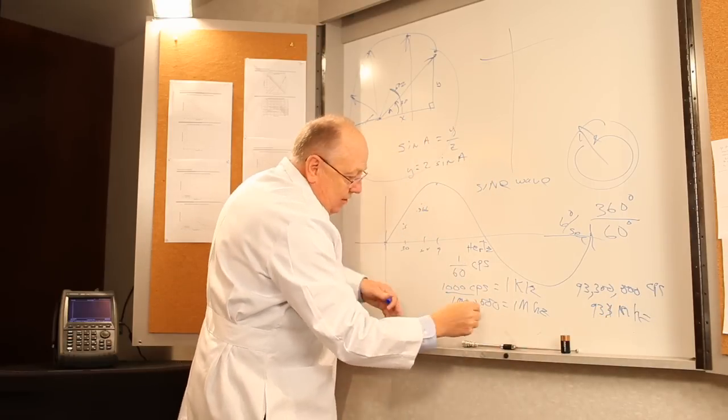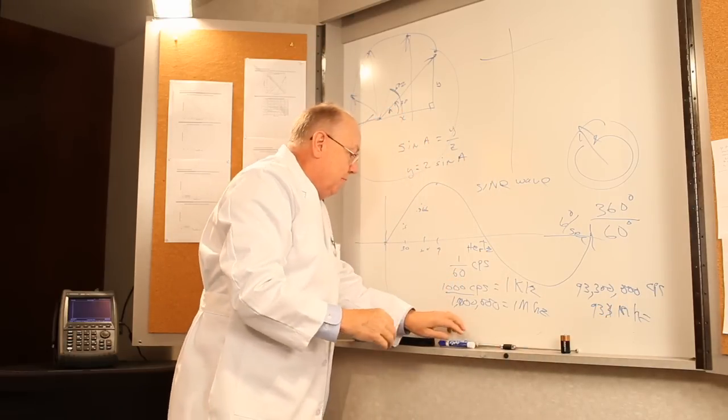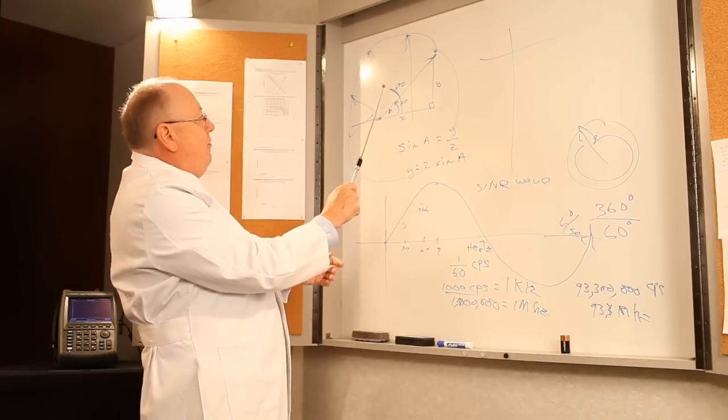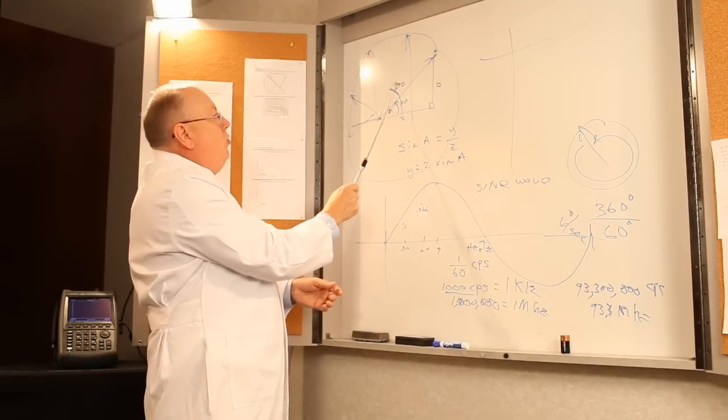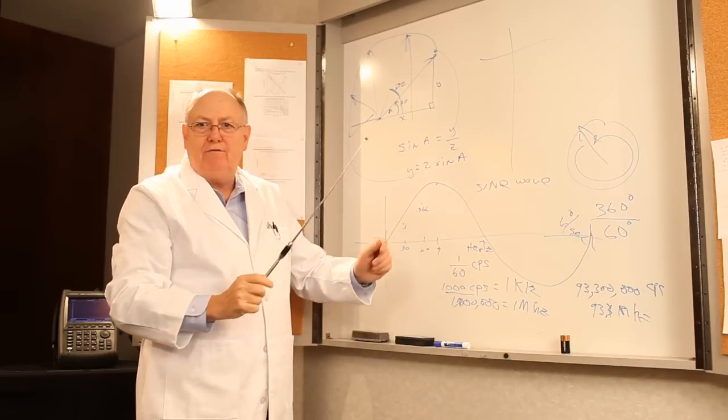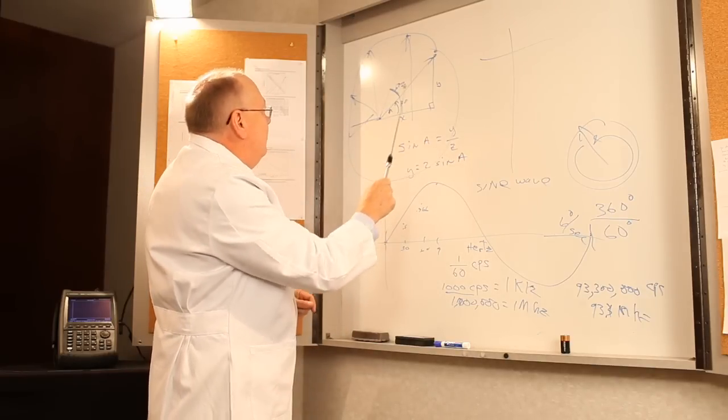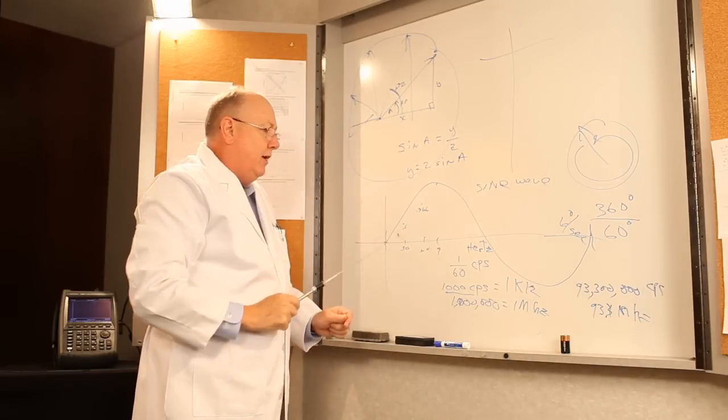And of course, if you go to 1,000,000,000, you can go on and on from there. This is a very important thing. You have a vector that's rotating, and the frequency represents the angular velocity of the vector that's representing the sine wave.